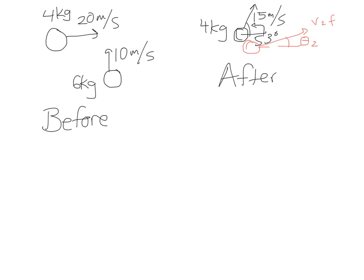The before picture is going to be exactly the same. 4 kilograms at 20 meters per second hits 6 kilograms going at 10 meters per second, one's going straight to the right, one's going straight up. Now after the collision, what we're showing is the 4 kilogram object moving at 53 degrees from the horizontal at a speed of 15 meters per second. The 6 kilogram object, we don't know which way it's heading, that's exactly what we're trying to figure out.